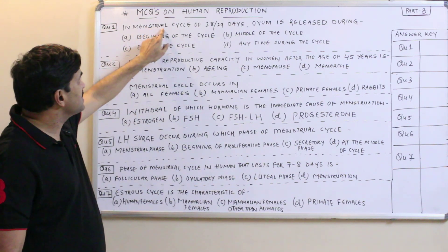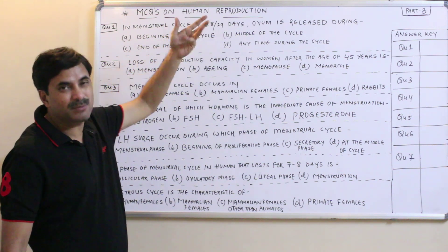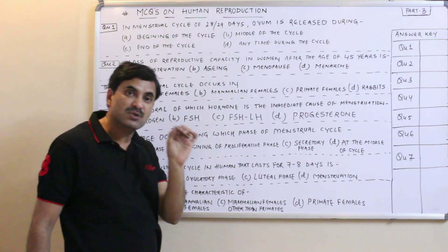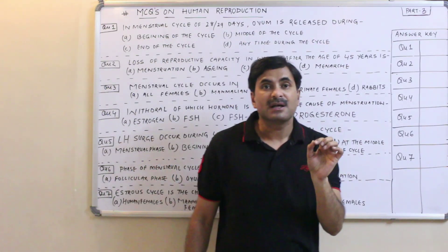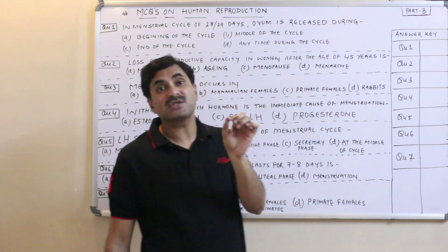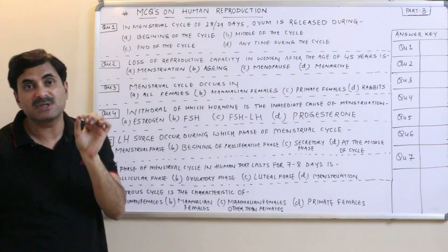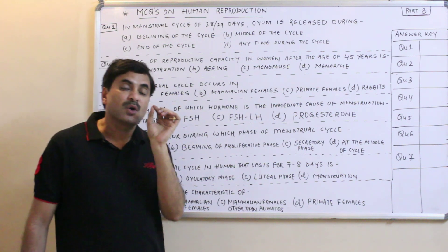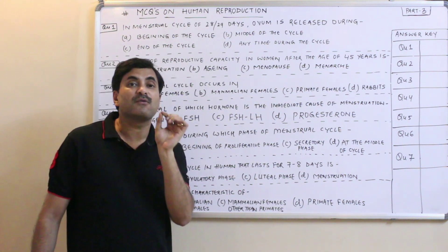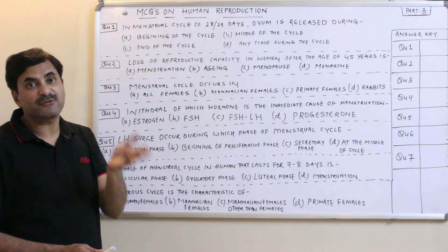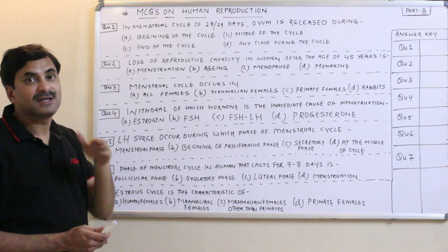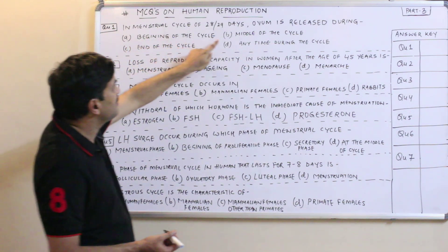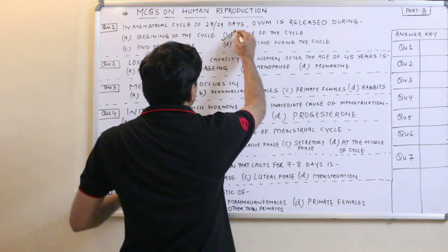In a menstrual cycle of 28 days, when is the ovum released? You must know that the ovum is released in the middle of the menstrual cycle — generally on the 14th day, since half of 28 is 14. So the 14th day is the middle of the menstrual cycle, from the beginning to the end.